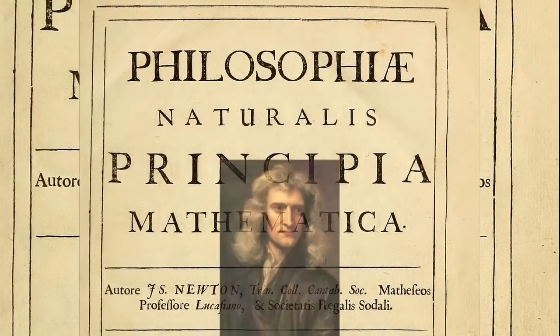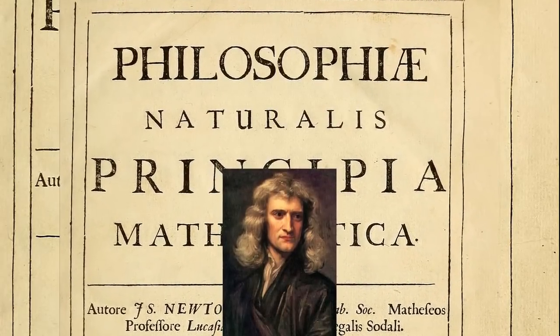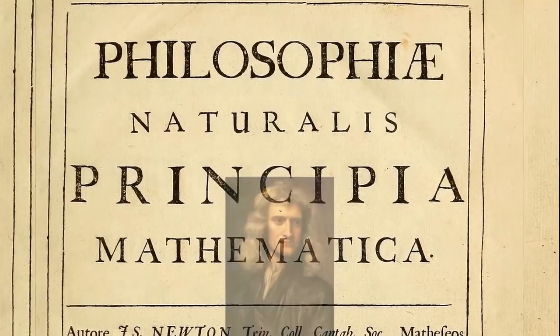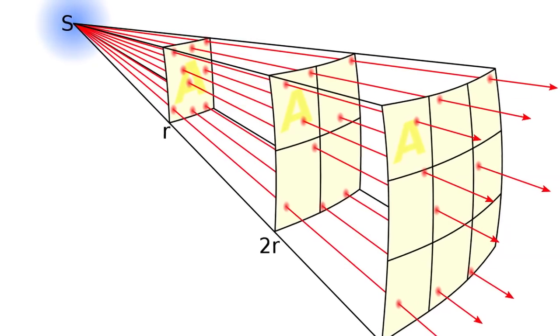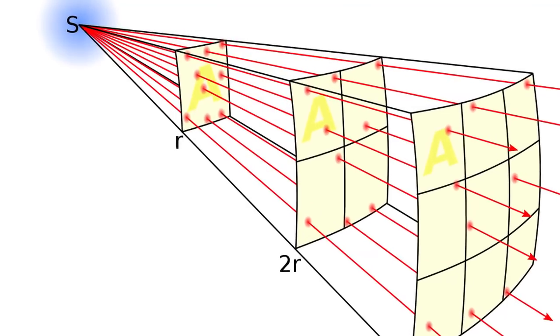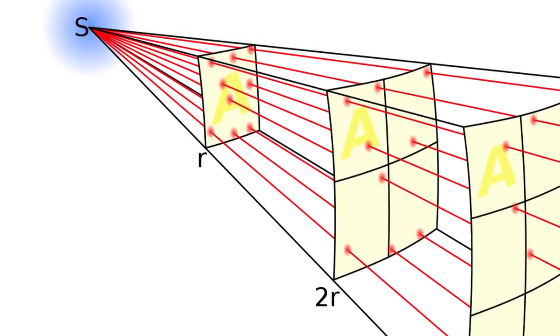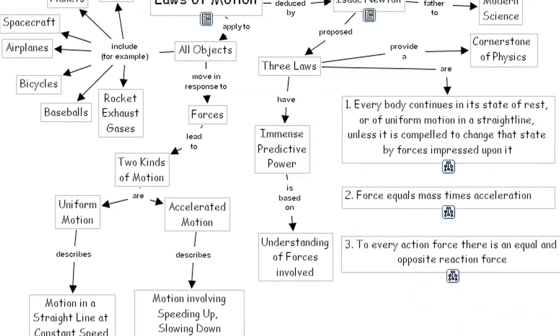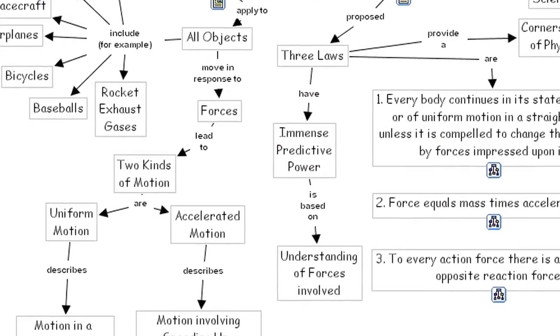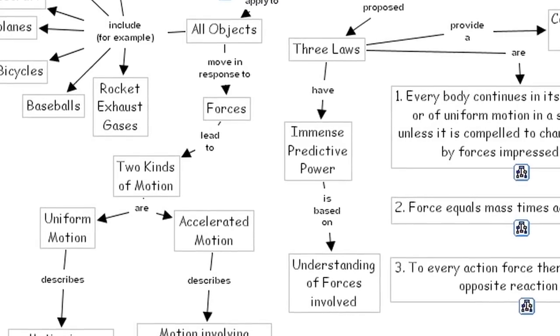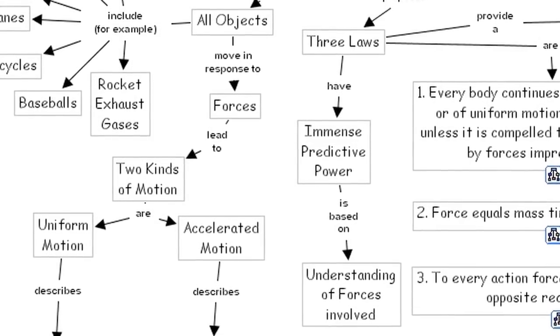On July 5, 1687, Isaac Newton published Principia Mathematica, defining, amongst his laws of motion, the law of gravitation. Formulating the inverse square law, he unified the motions of an apple falling to earth with the orbits of the planets as the result of the same calculable force. As remarkable as it was, it merely described how objects moved in relation to each other. It did not explain why. It was, after all, a law, not a theory.